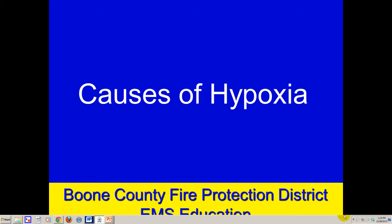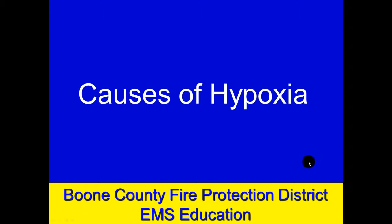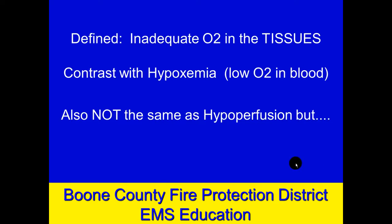We talked previously about the two things that kill Mrs. Smith: hypoxia and hypoperfusion. We want to delve into the various causes of hypoxia. In a later lesson, we'll talk about how to assess for it and how to treat for it. First thing we ought to do is define hypoxia. Very simple definition: inadequate oxygen delivered to the tissues is hypoxia.